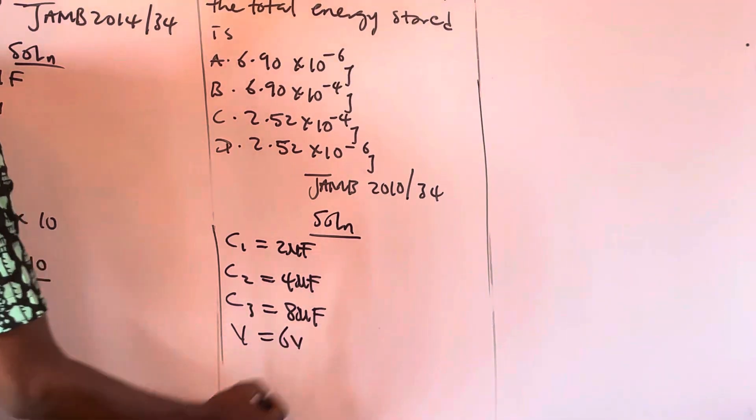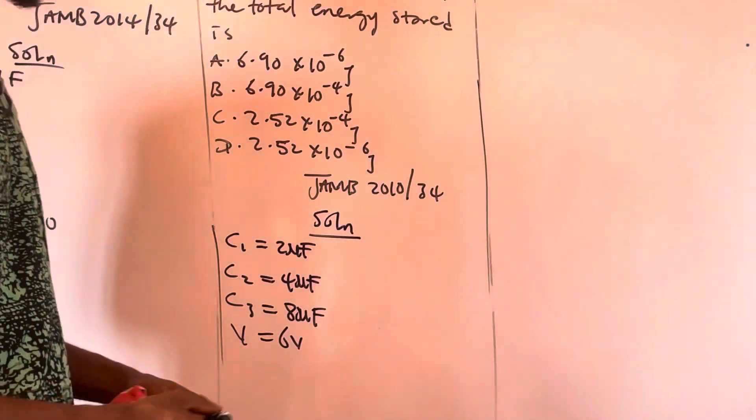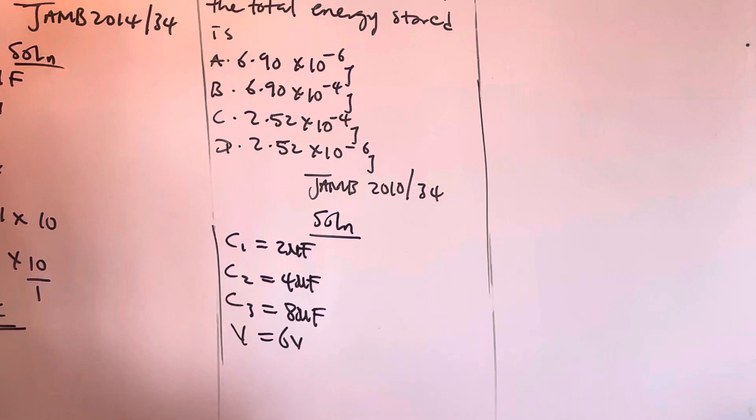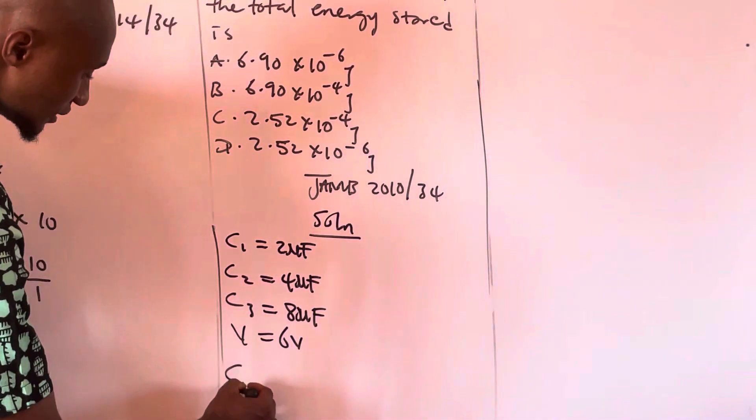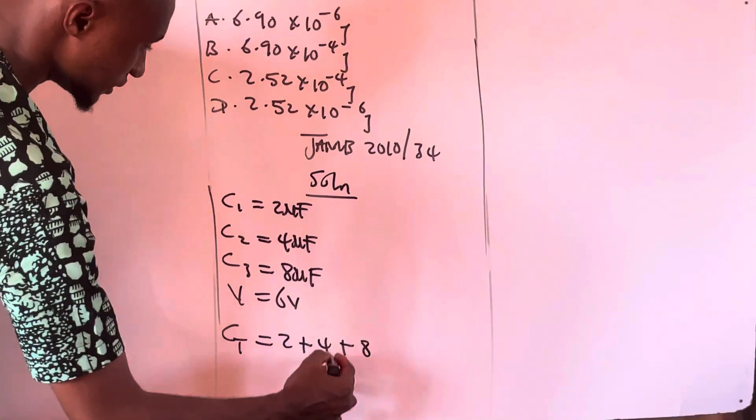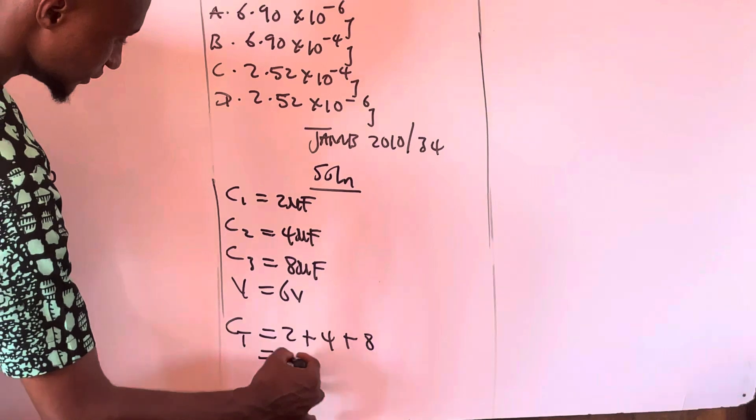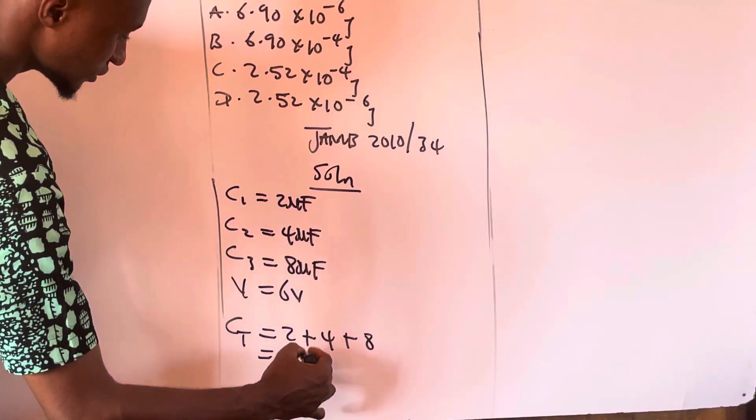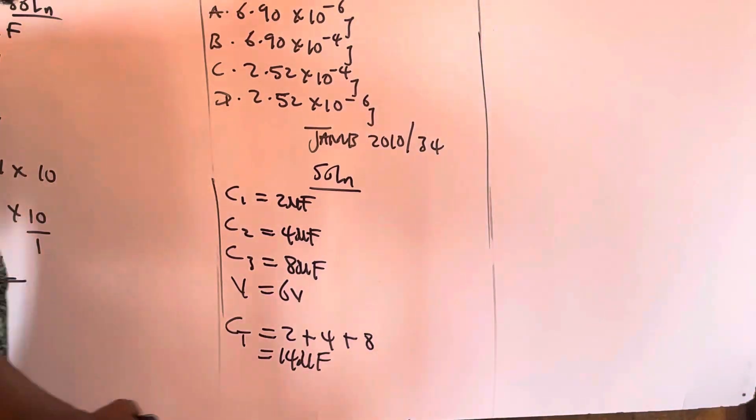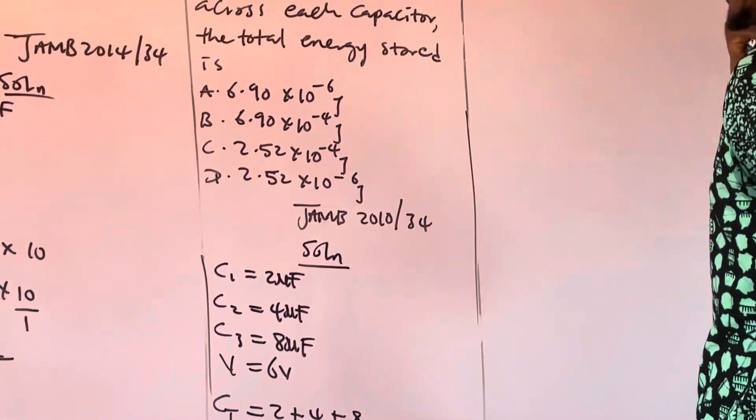This voltage is maintained across each capacitor. Total energy stored is—since they are in parallel, total capacitance C is equal to 2 plus 4 plus 8, and this will give us 14 microfarads, right? 14 microfarads.